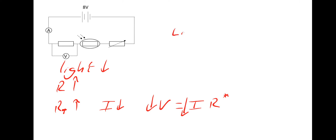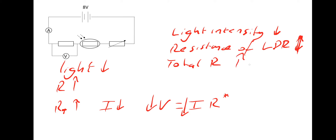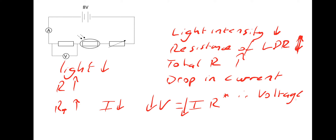In words: light intensity goes down, resistance of LDR goes up, total resistance will also increase, which leads to a drop in current, therefore voltage drop on the voltmeter.